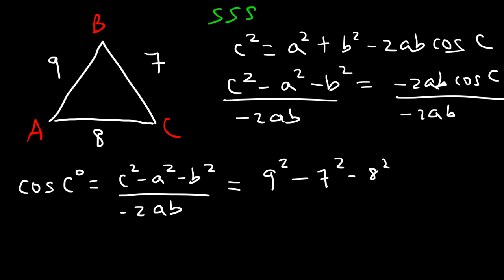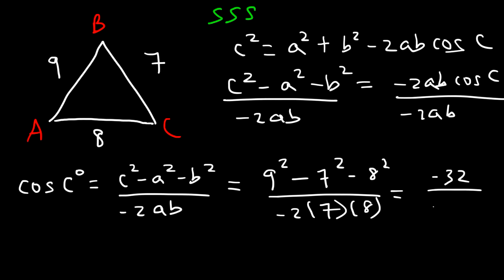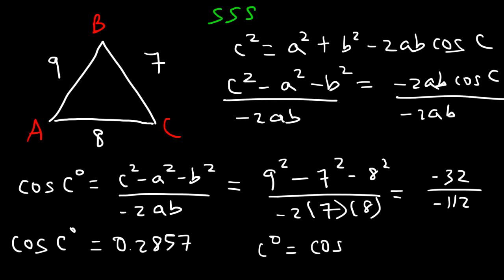With C equals 9, A equals 7, and B equals 8: 9 squared is 81, 7 squared is 49, and 8 squared is 64. So 81 minus 49 minus 64 equals negative 32. And 2 times 7 times 8 is 112. So negative 32 divided by negative 112 is 2 over 7, which as a decimal is 0.2857. That equals cosine of angle C, so angle C is the arc cosine of 0.2857, which is about 73.4 degrees.